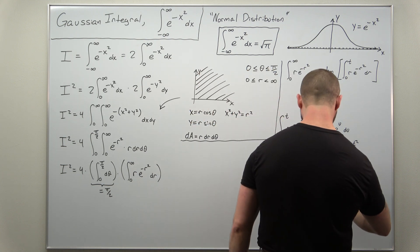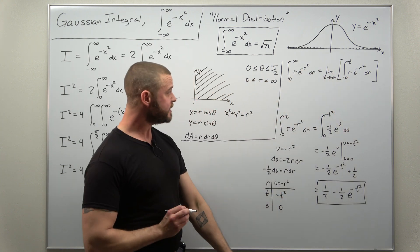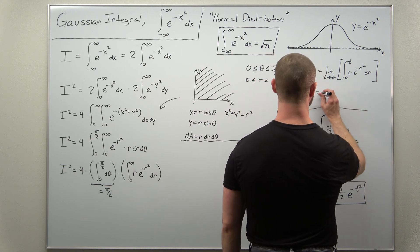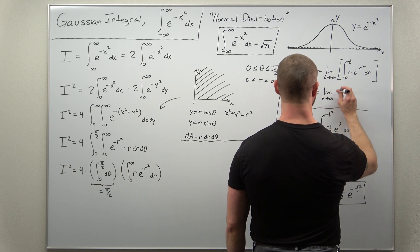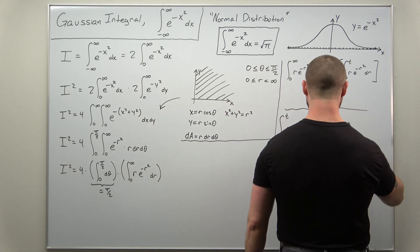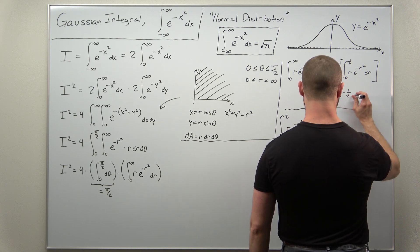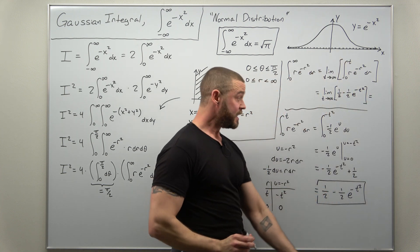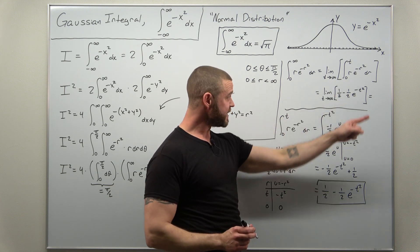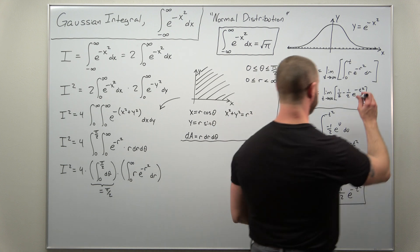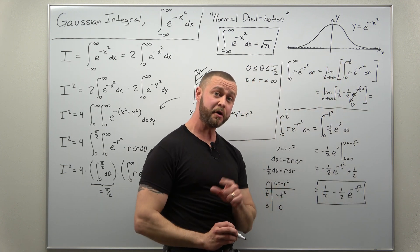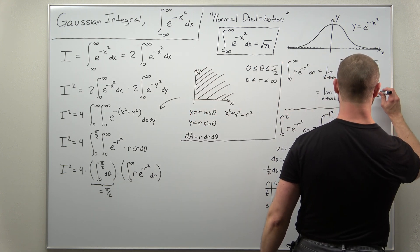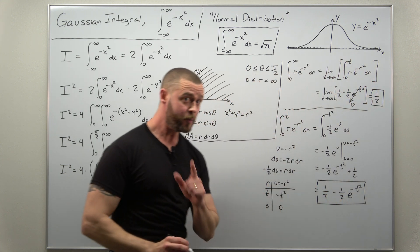We're practically done. The only remaining step is to take the limit of that expression as t goes to infinity: the limit as t approaches infinity of one half minus one half e to the negative t squared. Rewriting e to the negative t squared as one over e to the t squared shows it's a decreasing exponential that approaches zero as t approaches infinity. So the value of our r integral comes out to positive one half.